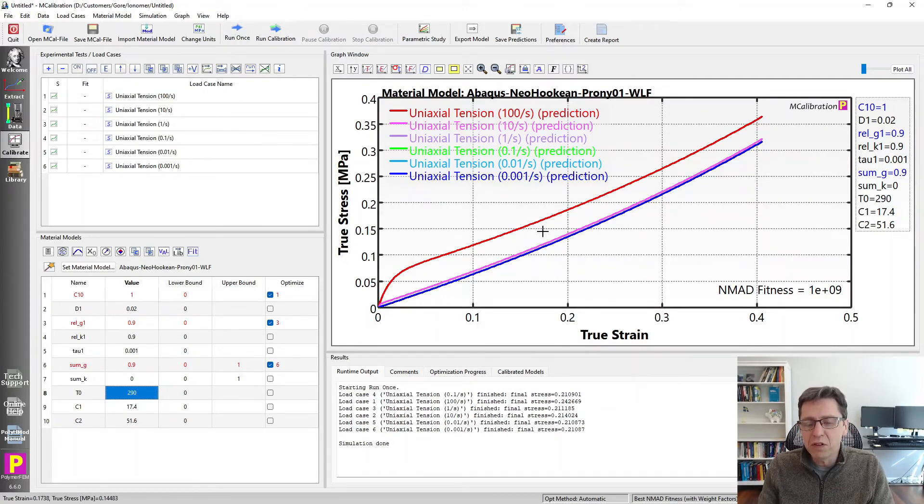So if you have data at different strain rates and also at different temperatures, you can find both the Prony series and the WLF equations at once using this approach by searching for these parameters, for example, in this way.